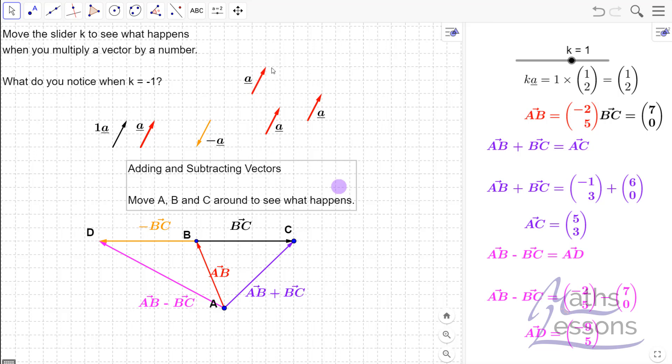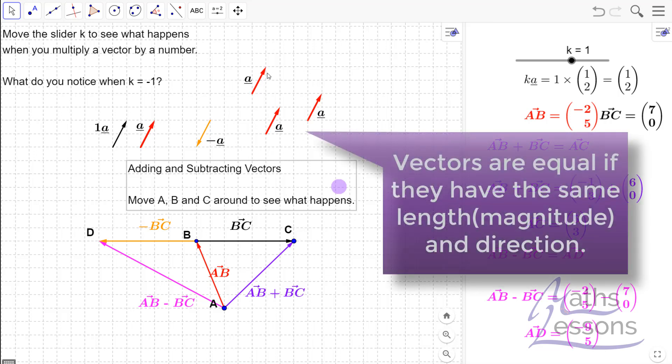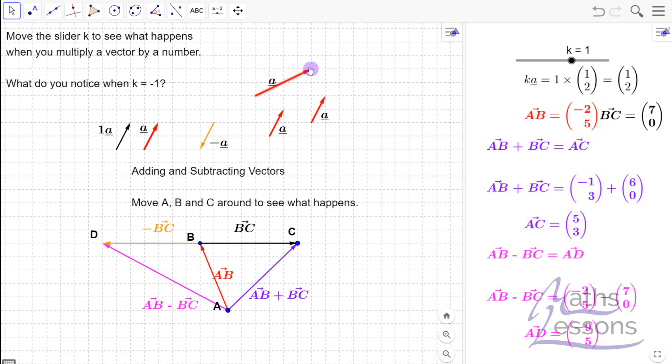Here we have vector A which goes one square along and two squares up. That gives us our direction and our length. And all these vectors are equal—they're all equal to A because they all have the same direction and all have the same length.